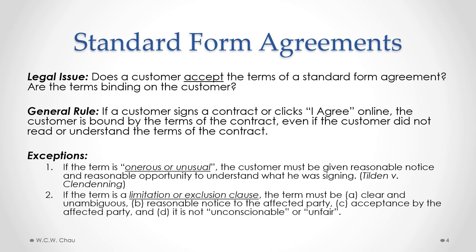Another exception the courts have developed has to do with the enforceability of a limitation or exclusion clause. The courts say that for a standard form agreement to be enforceable on a consumer, the exclusion or limitation clause has to meet four requirements: it has to be clear and unambiguous; there has to be reasonable notice of that clause to the affected party; there has to be acceptance by the affected party, which is usually the consumer; and lastly, it is not unconscionable or unfair.